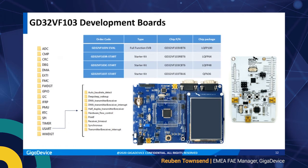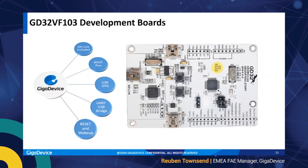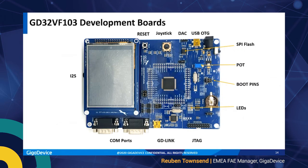With these boards, software examples and templates are included that demonstrate how peripherals and system resources are set up, configured, initialized, and used. These are very good templates to use in your own application. You can see here a zoomed-in look at the starter kit showing the MCU, the IOs, and the GD-Link debug probe card soldered onto the board, as well as the development evaluation board with its additional resources.